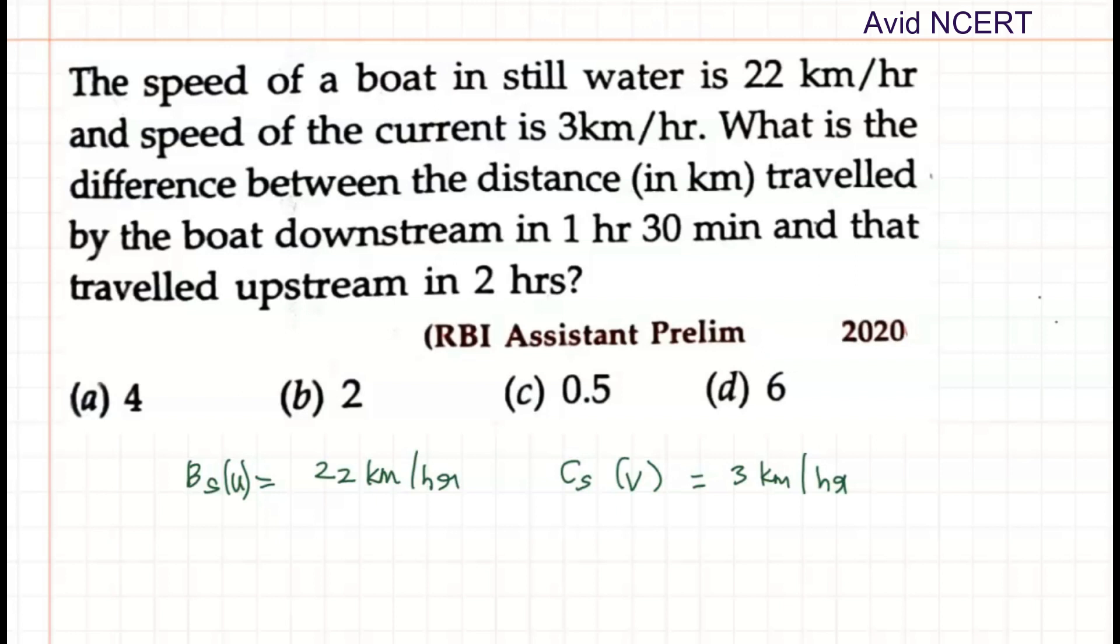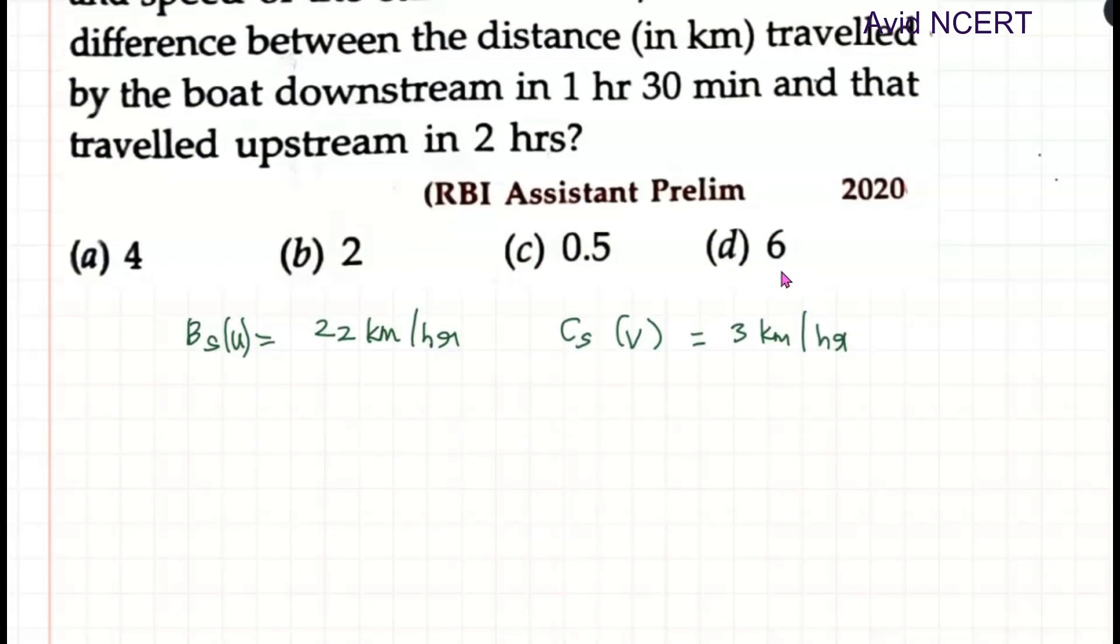What is the difference between the distance traveled by the boat downstream? For downstream, time taken TD equals 1 hour 30 minutes, and time taken to travel upstream is equals 2 hours.